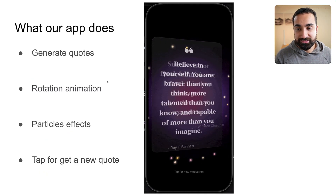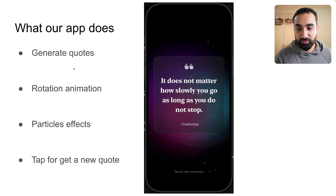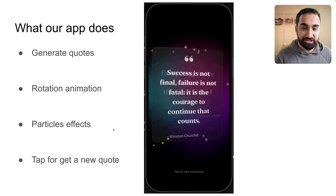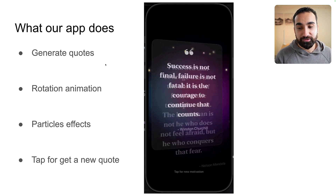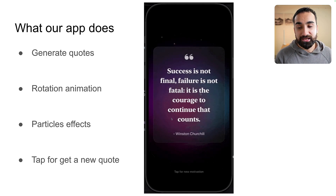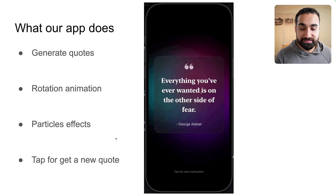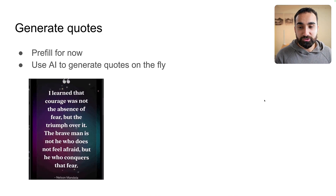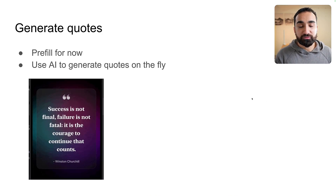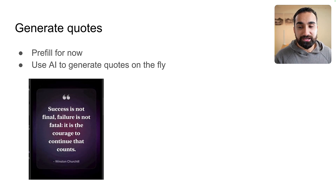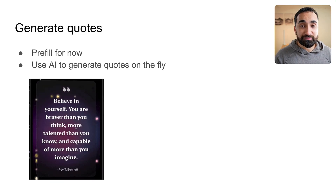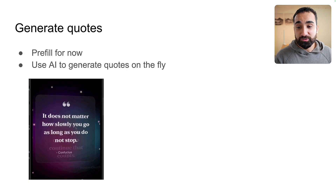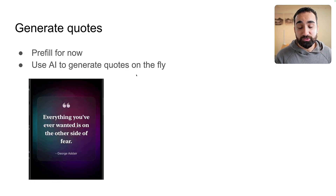Let me quickly go over the four core components inside our application. First, the generation of the quotes. Second, the rotation animation. Third, the particle effects. And fourth, tap to get a new quote. For quote generation, we're going to pre-fill all of these quotes inside the application — essentially hard-coding each one. But you can imagine we could use AI in the future to generate these quotes on the fly.